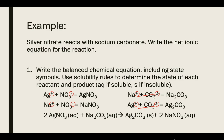Using solubility rules, we determine what's aqueous and what's solid. Anything with an alkali metal such as sodium is aqueous, so the sodium compounds on both the reactant and product sides are aqueous. Anything containing nitrate is also aqueous, so silver nitrate on the reactant side is aqueous. Alkali metals and nitrates are always aqueous — those are probably the best two to remember. Silver carbonate on the product side is going to be solid, because carbonate is an insoluble ion and it's not bonded to an alkali metal here. It is the solid precipitate that forms during this reaction.